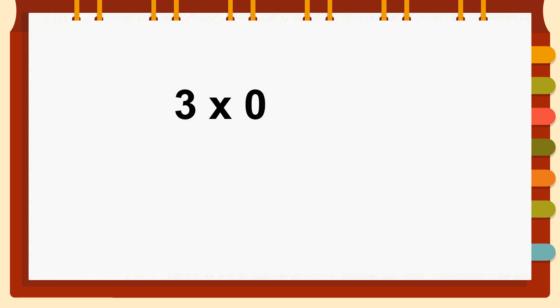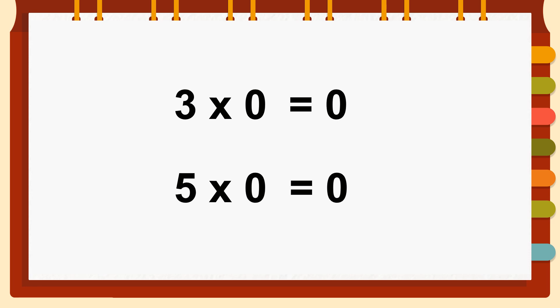We also know that we can move numbers around. Here we have three times zero and five times zero, and it doesn't change the answer. So it doesn't matter where your zero is placed in your multiplication — your answer remains zero.